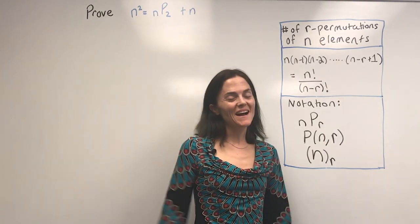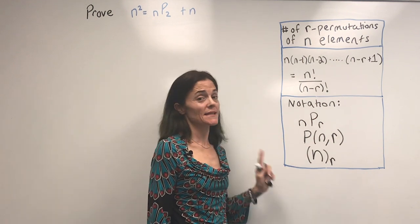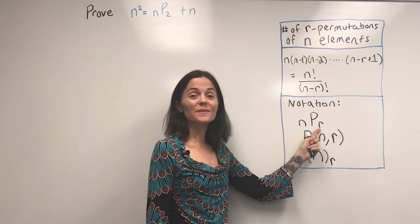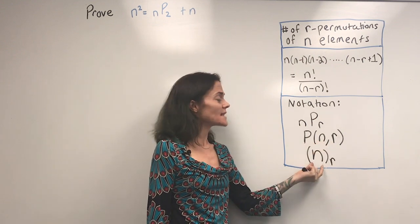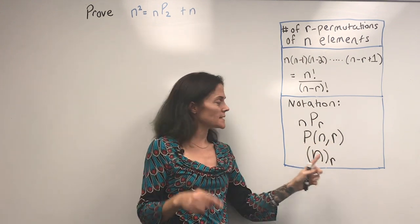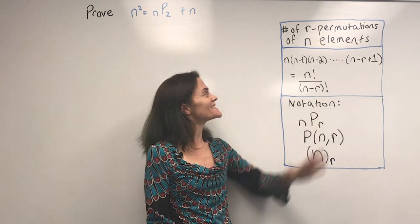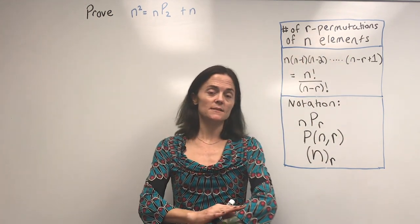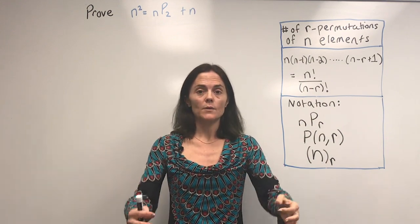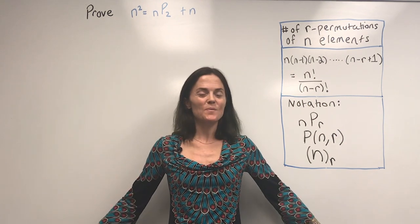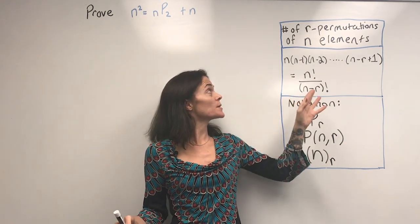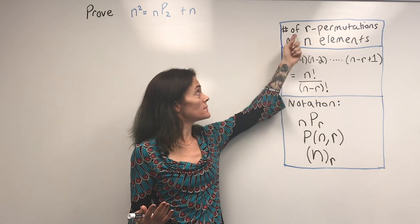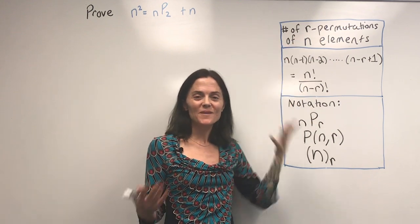I will do one more combinatorial proof. First, let's clarify notation: you might see N P R, P(N,R), or N subscript R — they all stand for the same thing, the number of R-permutations of N elements. Suppose I have a class of 20 and I would like to line five of you up at the board — this would be a five-permutation of 20 elements. We'd like to show that N squared equals N P 2 plus N.